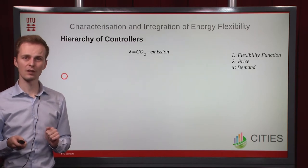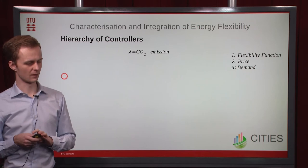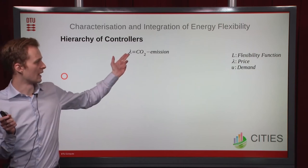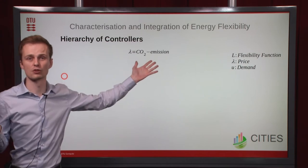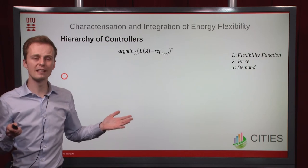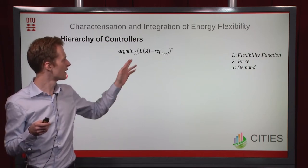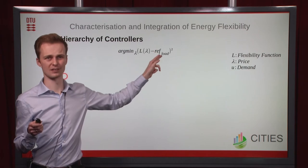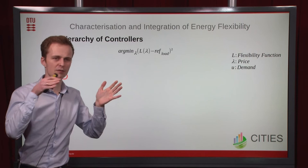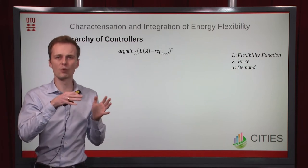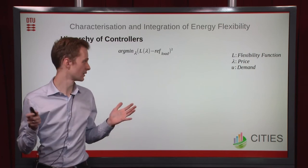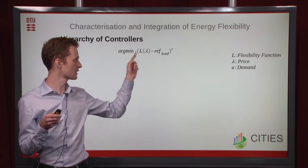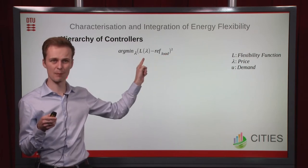How can you use this? If we want to run the power grid to minimize CO2 emissions, prices lambda could be set to the CO2 emissions or some function of them. More advanced, we could use the flexibility function L to make the load follow some reference — perhaps constant to avoid peaks, or following wind production. The point is that you can formulate this as an optimization problem: find the price that minimizes the difference between expected demand and some reference load.